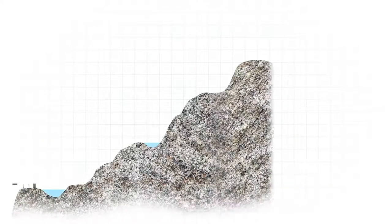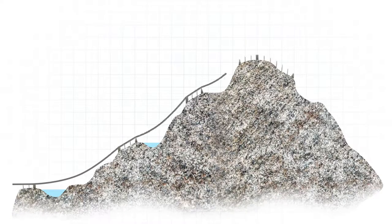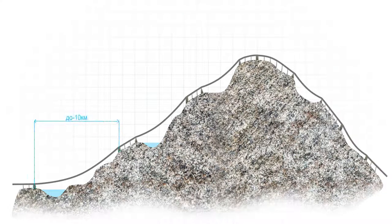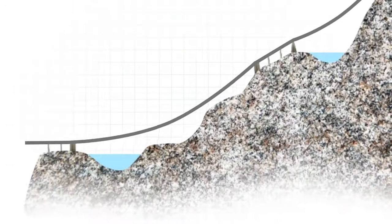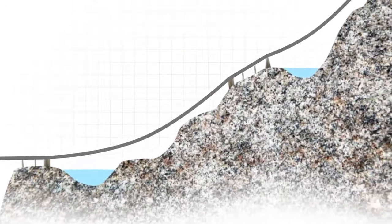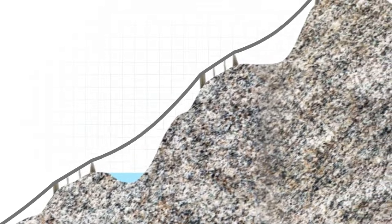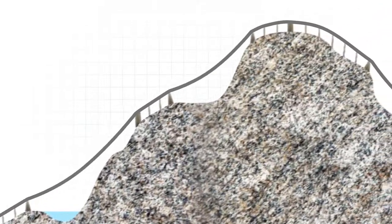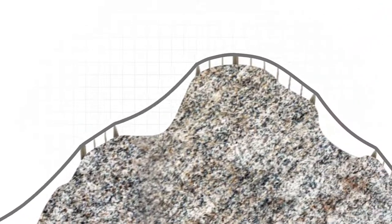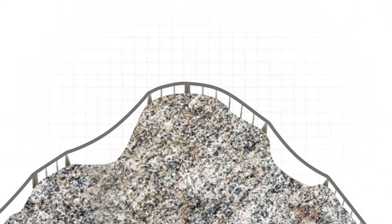Так могут быть преодолены глубокие ущелья, расстояния между островом и материком, между вершинами соседних гор и другие препятствия. Параболический прогиб путевой структуры под действием силы тяжести незначителен, что позволяет плавно вписать его в продольный профиль трассы.